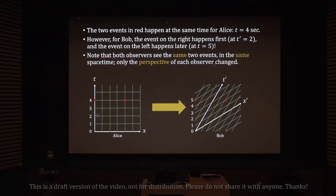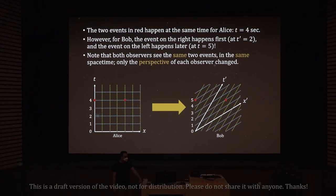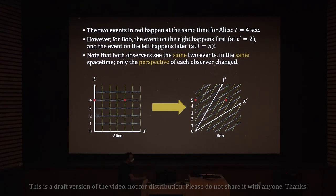You can imagine this as an actual experiment. Alice puts two light bulbs on each side of the desk and presses a button. In her frame, pressing the button makes both light bulbs turn on at the same time. But Bob is moving very fast past the desk, and he will actually see the light on the right turn on first, and only then the light on the left.